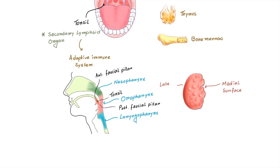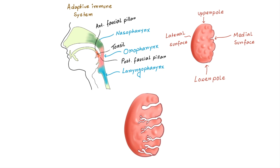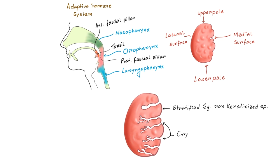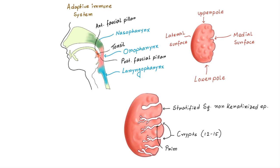Tonsil has two surfaces — medial and lateral — and two poles: upper pole and lower pole. The medial surface is lined by stratified squamous non-keratinized epithelium, which dips into the crypts. You can see multiple crypts, usually 12 to 15 in number. Secondary crypts arise from the primary crypts and extend into the substance of the tonsil. One crypt located in the upper part of the tonsil is larger than the others and has a special name: Crypta magna. The crypts serve to increase the surface area of the tonsil and may sometimes be filled with cheesy material like epithelial debris, food particles, and bacteria.